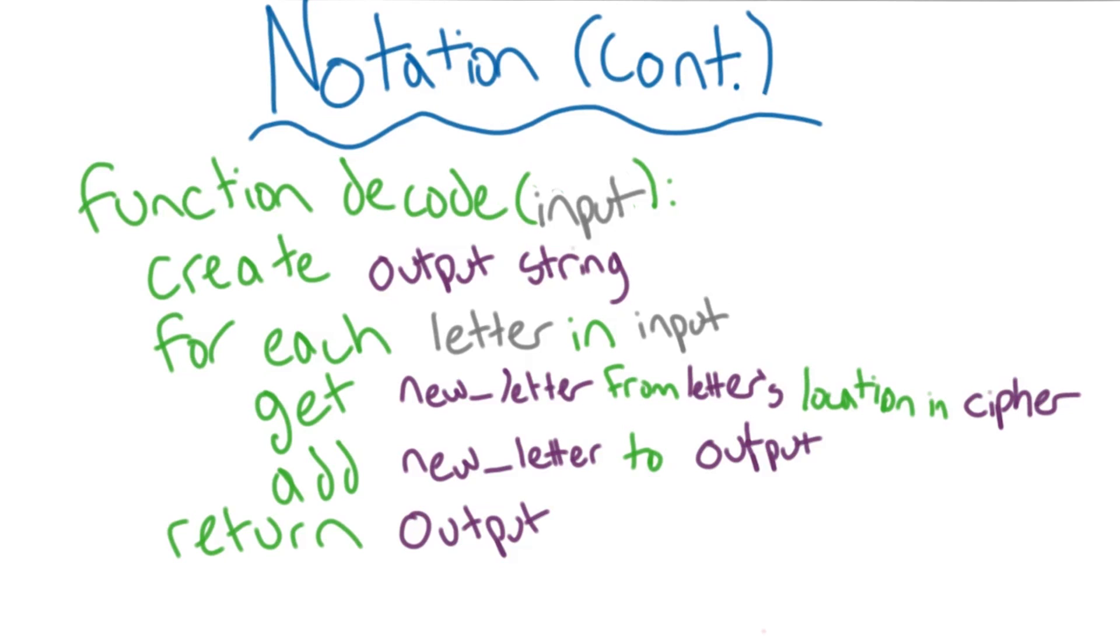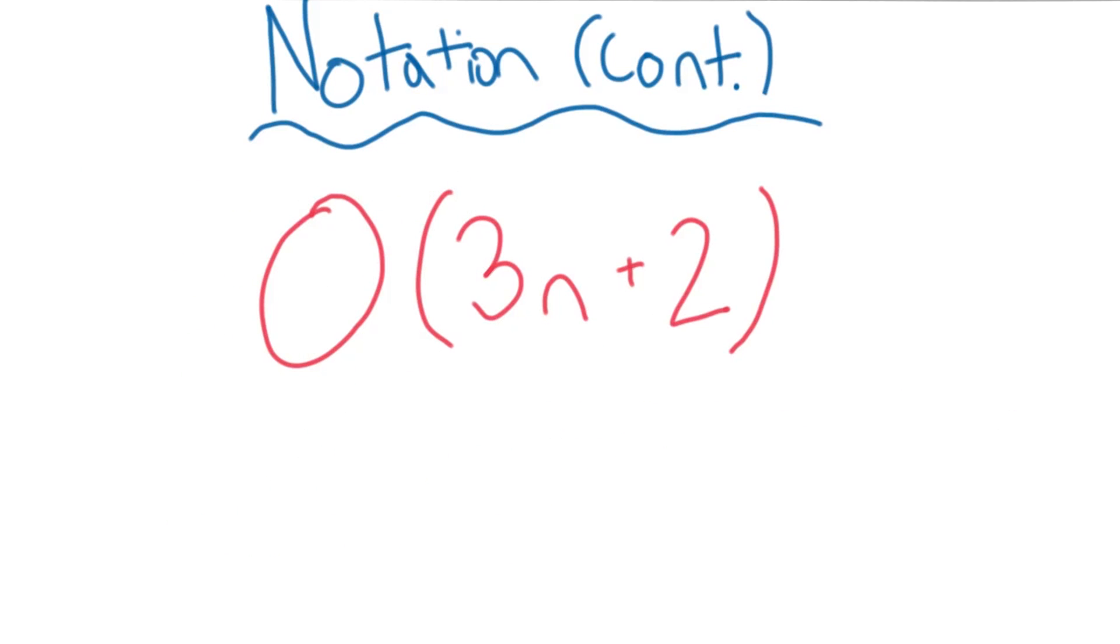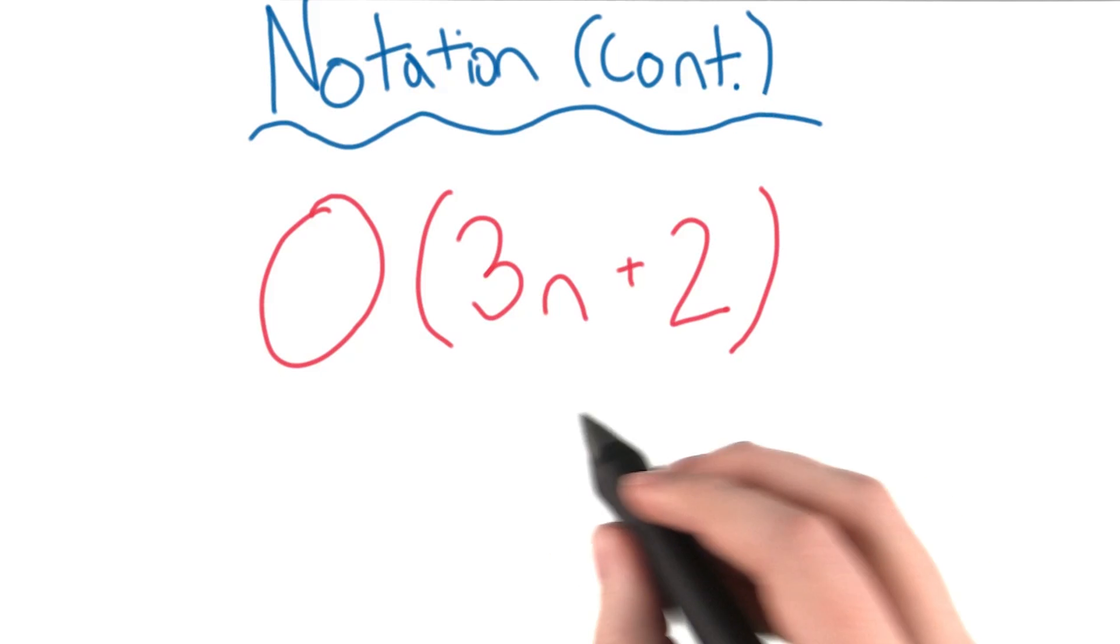In order for the loop to work, you need to do a computation each time to get the next letter in the string. Since this needs to happen one time for every input letter, we can just add one to the value before n, and now we end up with 3n plus 2.